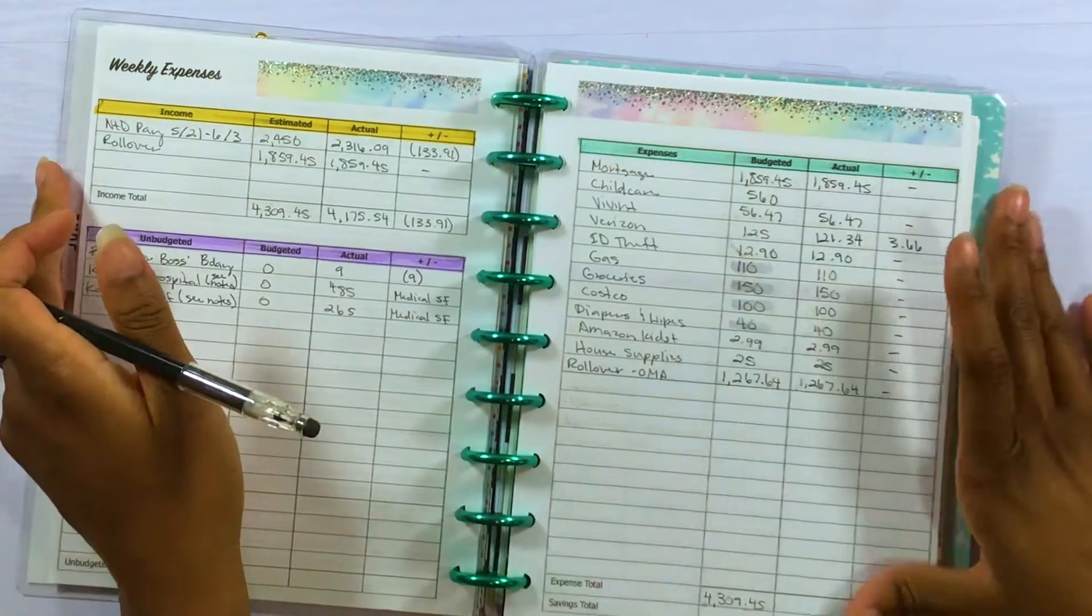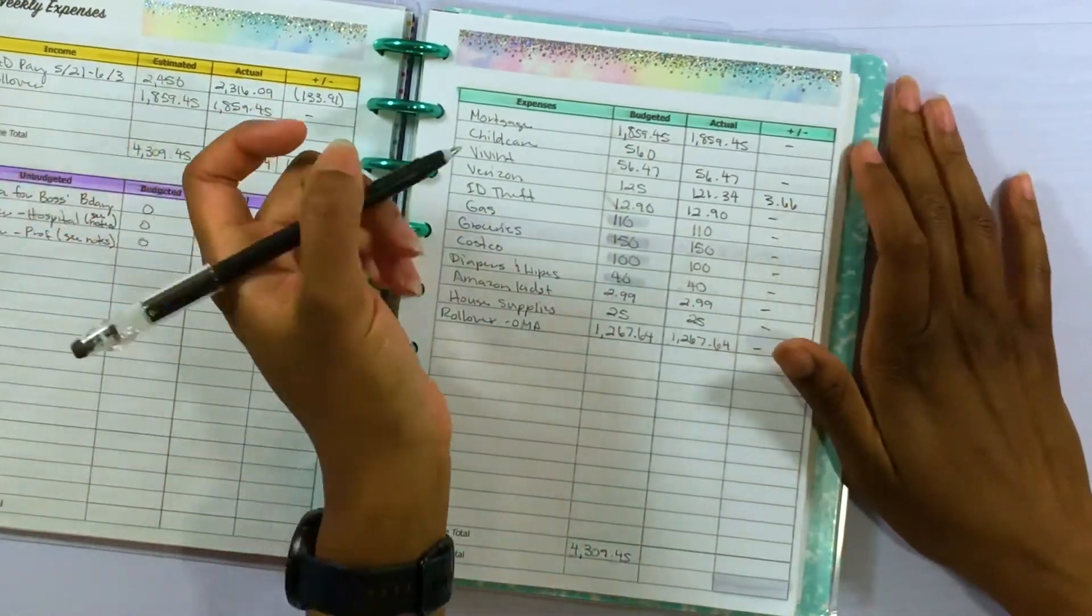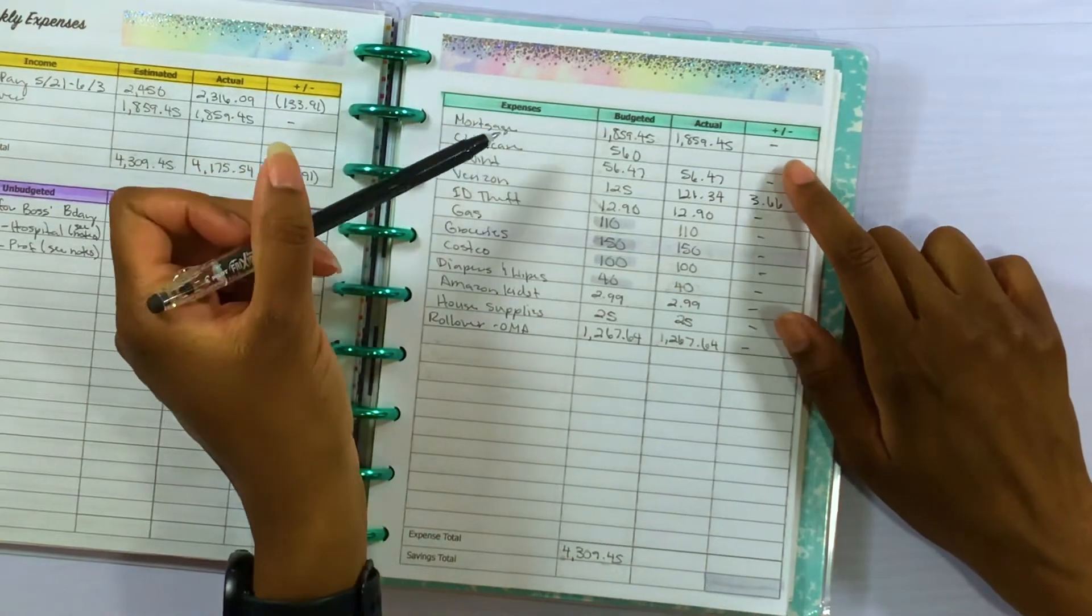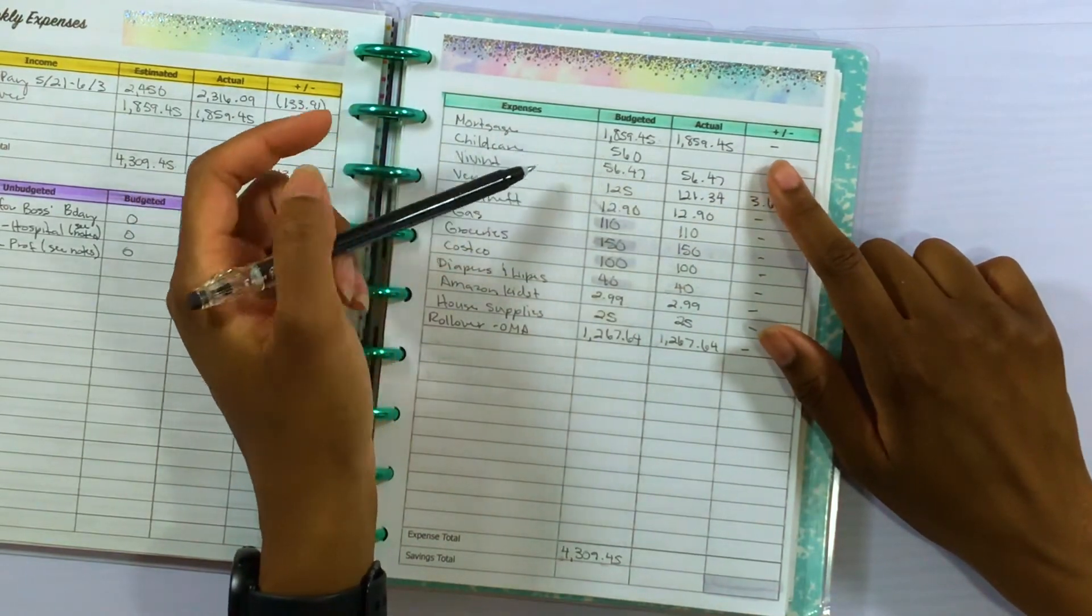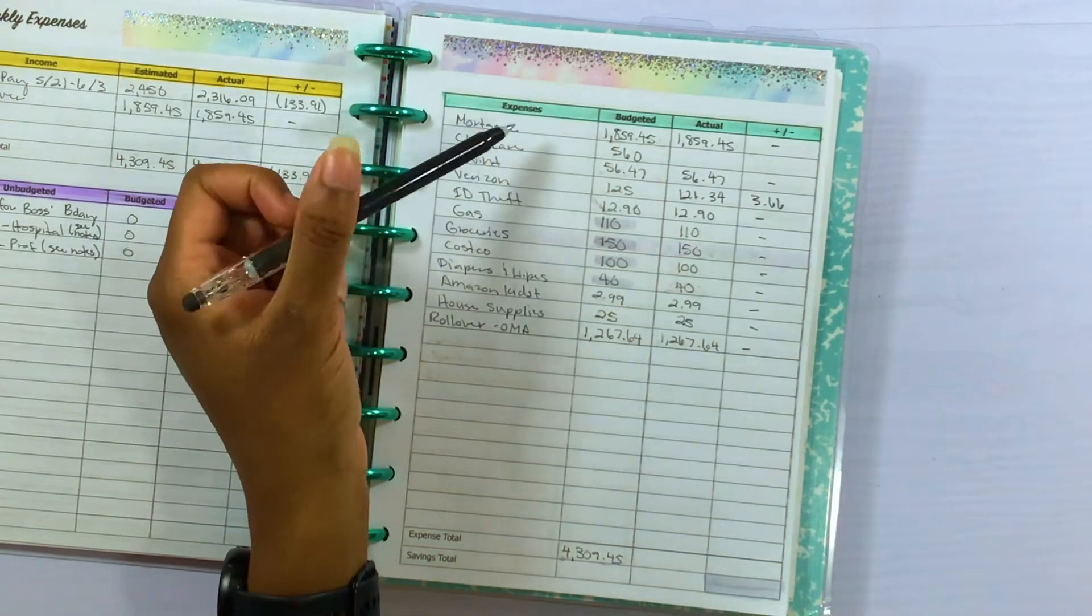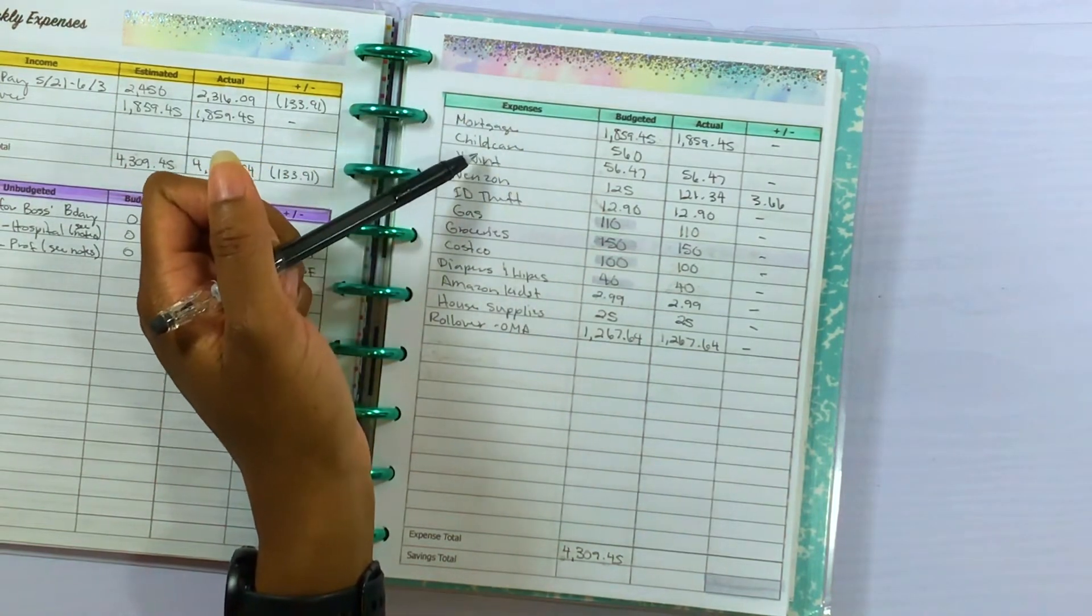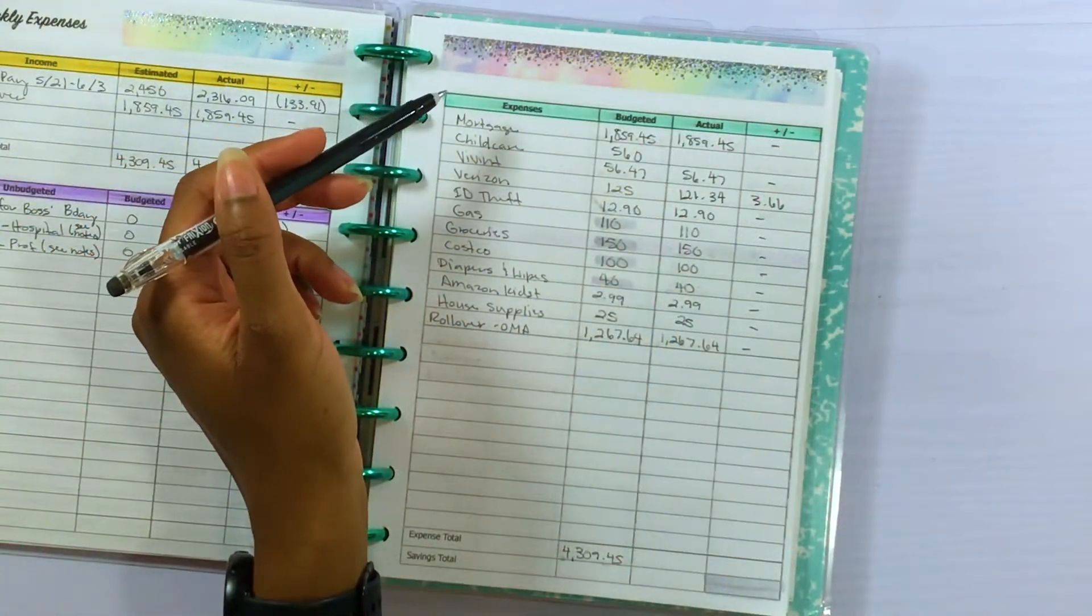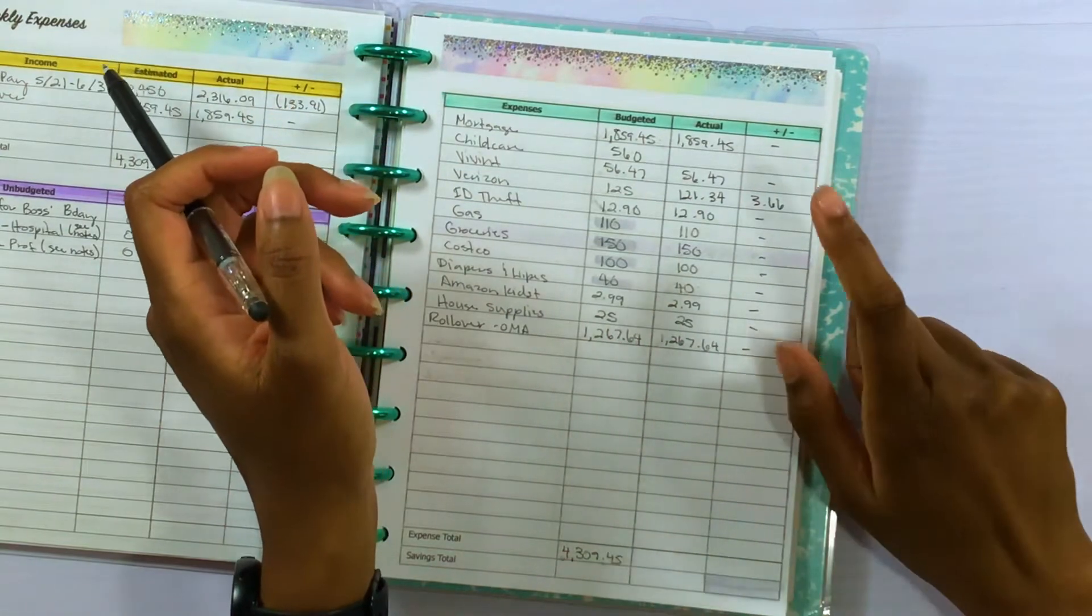Starting with the expenses, the mortgage came in on budget. I have to back into this child care number to see how much we can put towards child care since we did make less. Vivant came in on budget, everything else was basically on budget except Verizon was under budget by $121.34, which left us with $3.66 left over.